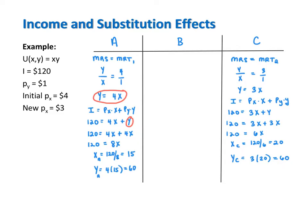To find bundle B, recall that it is a point of tangency between the original indifference curve and the compensated budget line. Because it's a point of tangency, we start with the same tangency condition as for bundle C, since the slope of the compensated budget line reflects the new relative price ratio. So for B, MRS equals MRT₂, or Y over X equals 3 over 1, meaning Y equals 3X. However, unlike for bundle C, we cannot use the original budget constraint, because the income behind the compensated budget line is no longer $120.